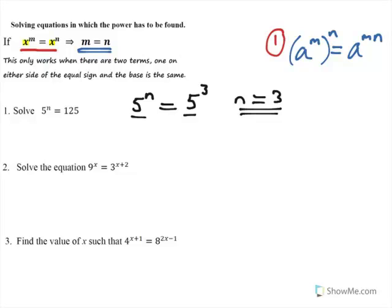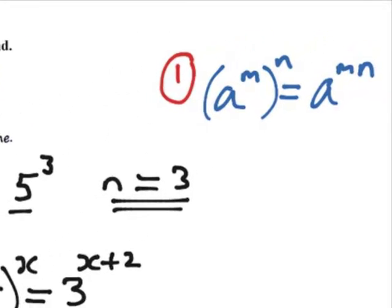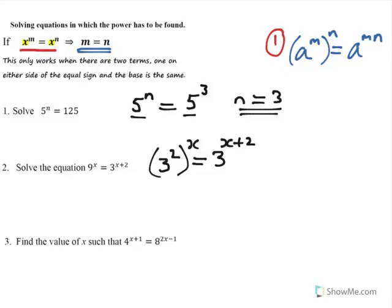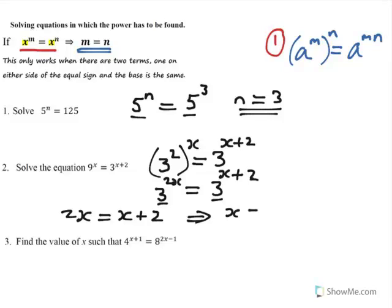The second one is a bit more involved. We must have the base the same and they're not. And can you see which base we should use? Well, the answer is we need to use base 3. So we're going to change that 9 to the power of x and write it as 3 squared to the power of x equals 3 to the power of x plus 2. Then we'll use rule number 1, where if you raise a power to the power, you multiply the powers together. And 2 times x is 2x, so you get 3 to the power of 2x equals 3 to the power of x plus 2. Now that the base is the same, we can say that 2x equals x plus 2, which means the powers are equal. Now if you subtract x from both sides, you get x equals 2.